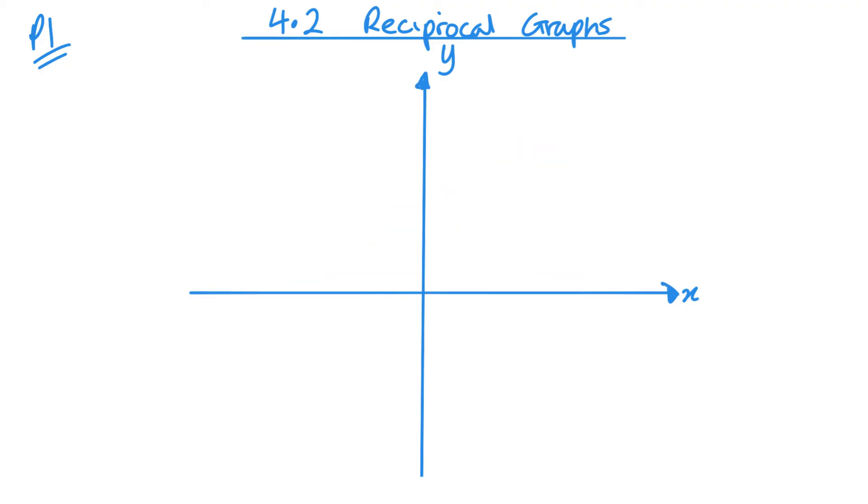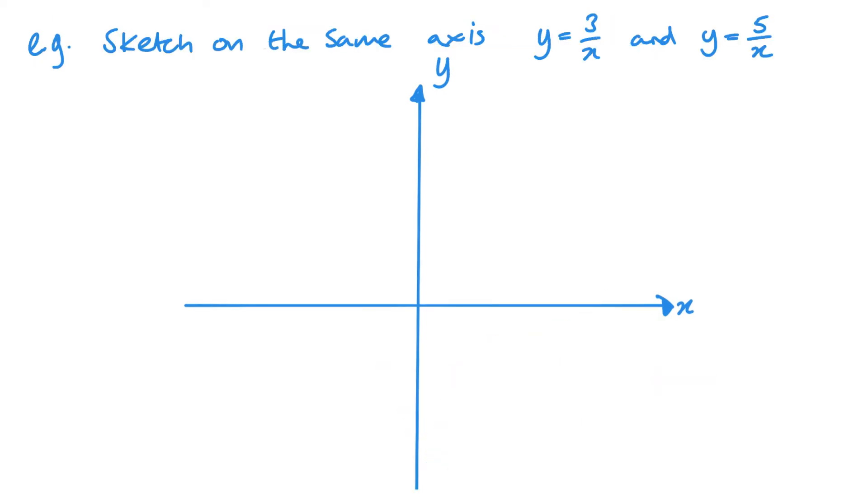And as you might have already guessed, if I talk about what happens to k over x squared when k is a negative number, I'm going to get the same kind of graph as the last one, just underneath the x squared. So y equals k over x squared, where k is negative.